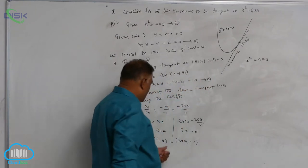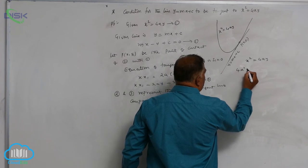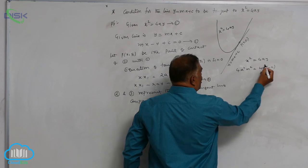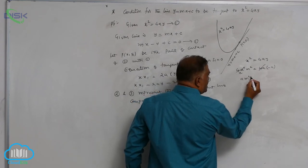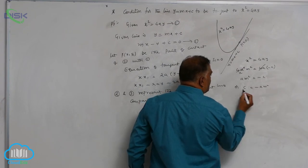Now in place of x and y, this is 4a square m square is equal to 4a into minus c. Now 4a, a is remaining, am square is equal to minus c, or c is equal to minus am square.